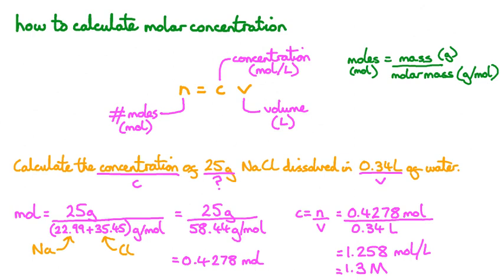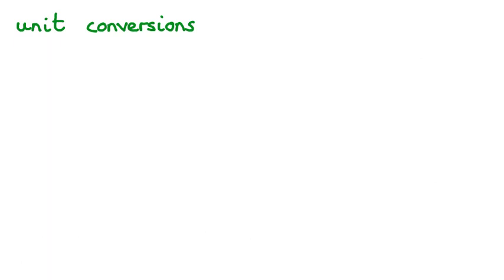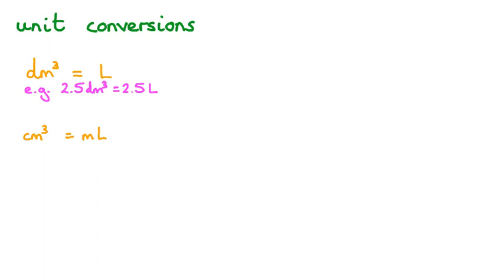Now let's have a look at what happens if we're given different units, as you may come across units which are not ideal for the calculation you're performing. When talking about volume, you may come across the units of decimetres cubed. So far we've been using litres, so how do we convert decimetres cubed into litres? As it turns out, decimetres cubed are equivalent to litres — any volume given in decimetres cubed is the same as it is in litres. Equally, a volume given in centimetres cubed is equivalent to the same volume in millilitres.